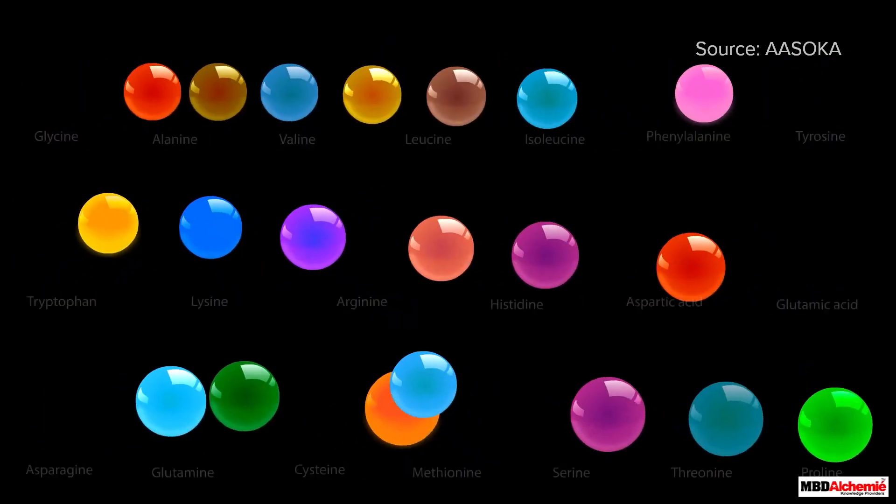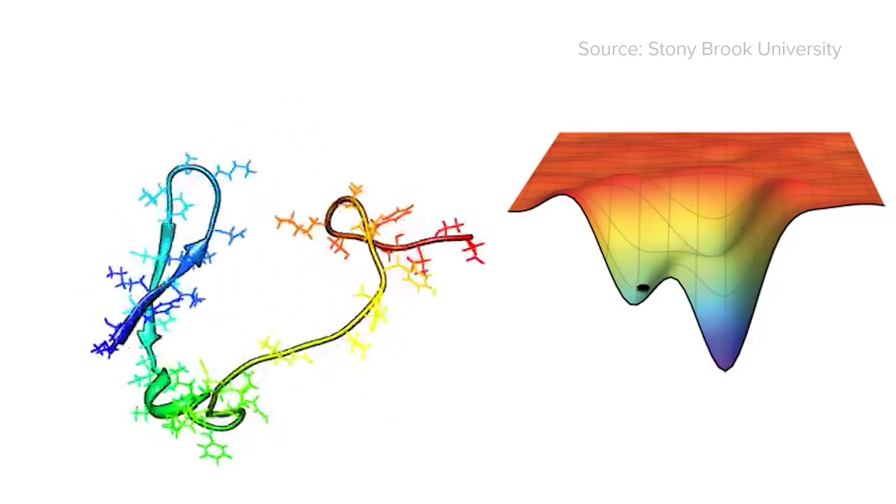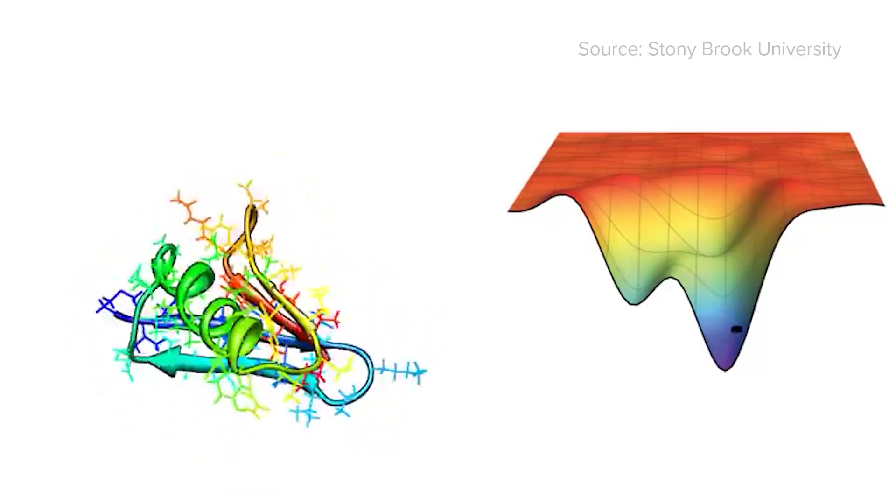When each of the 20 types of amino acids sequentially connect, the backbone molecules locally form secondary structures, the architectural building blocks of the 3D structures of proteins.